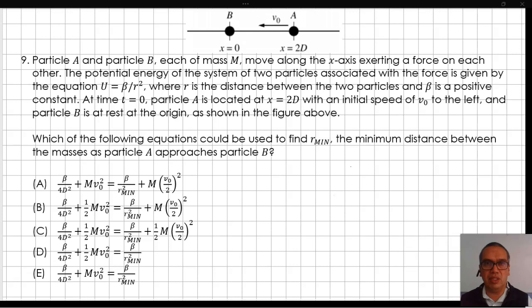The potential energy of the system of two particles associated with the force is given by the equation U equals beta over r squared, where r is the distance between the two particles and beta is a positive constant.